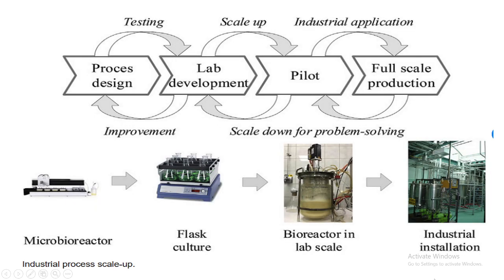The process starts with a process design, whose feasibility is checked at the laboratory scale. After that it is taken to the pilot scale — the mini bioreactor version — to check the other criteria. Finally, if everything fits, it is taken to the full-scale production or the large bioreactor. If at each stage there is some problem, the problem has to be looked into, troubleshot, and a solution has to be made.